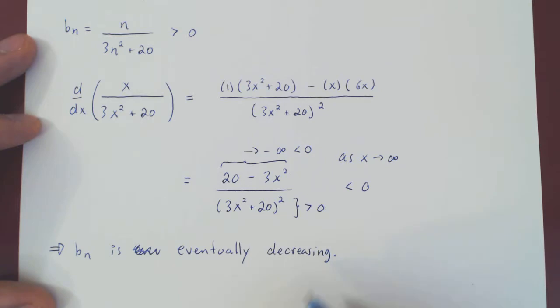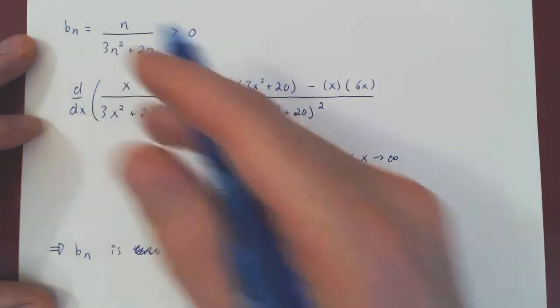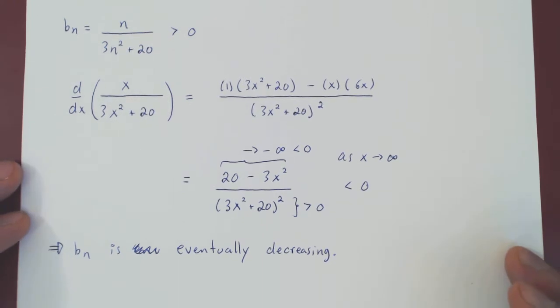So the first condition is met. The second condition, which now will be much easier, is to prove that the limit of bn, as n goes to infinity, is equal to zero.